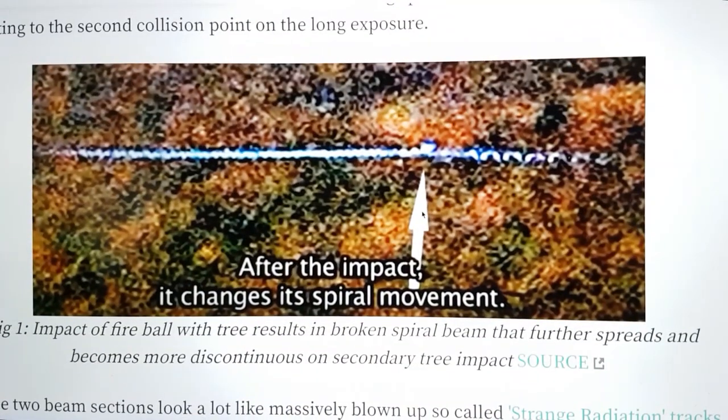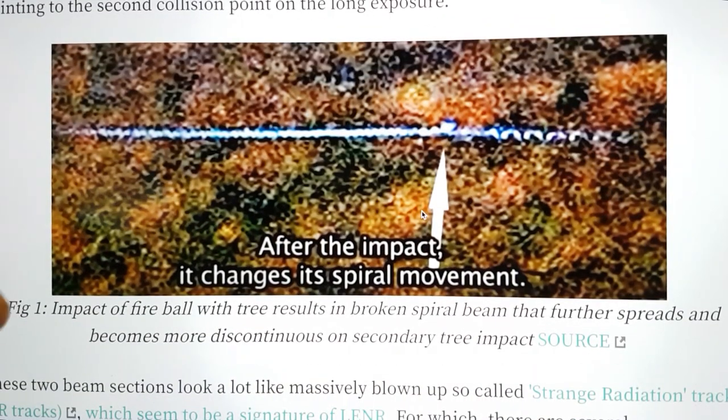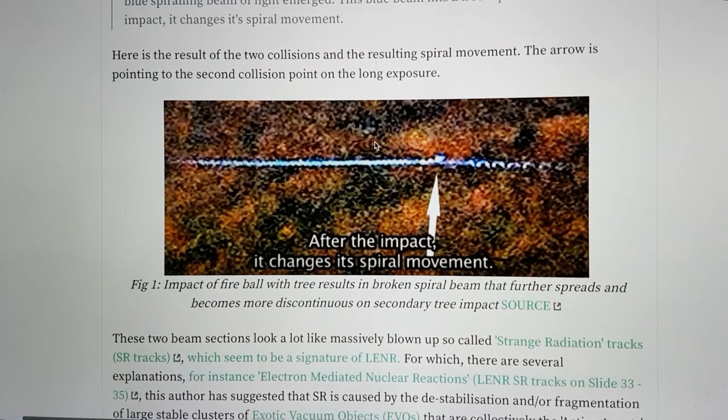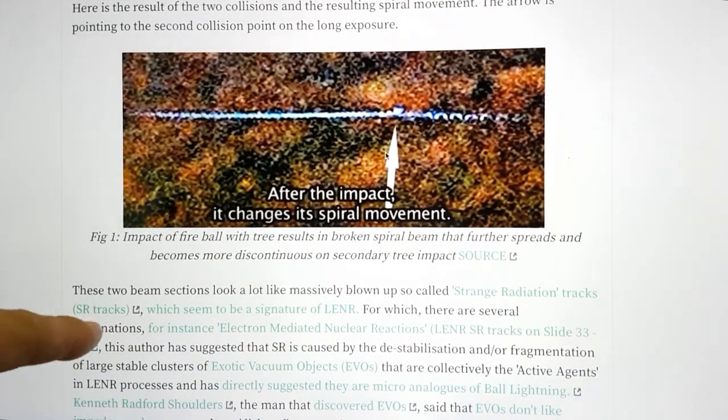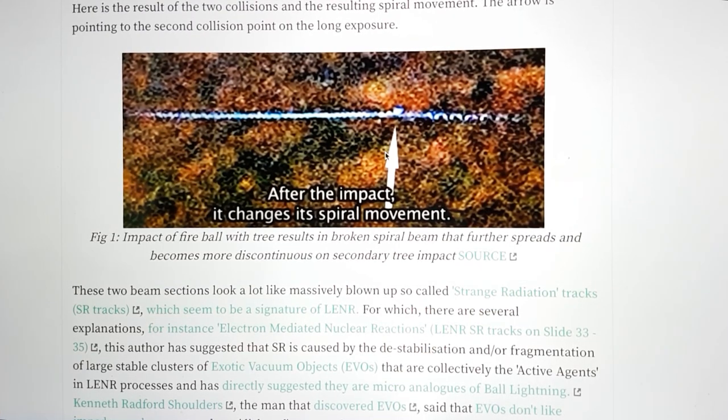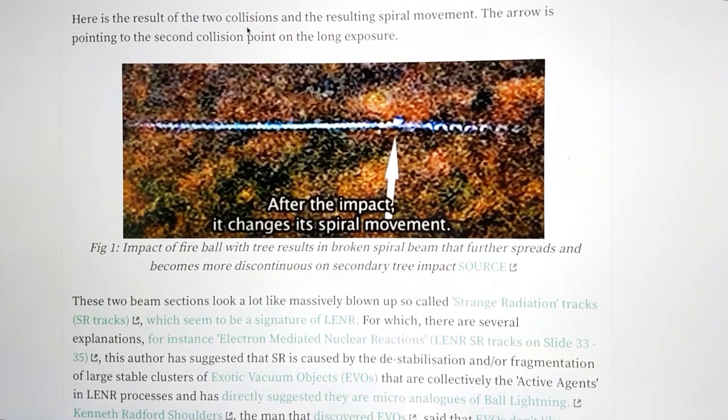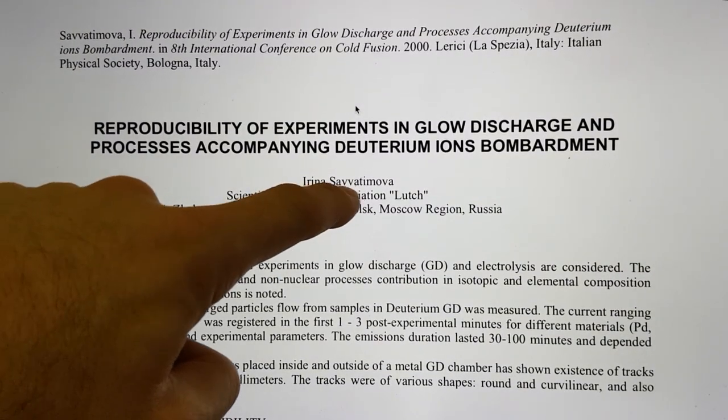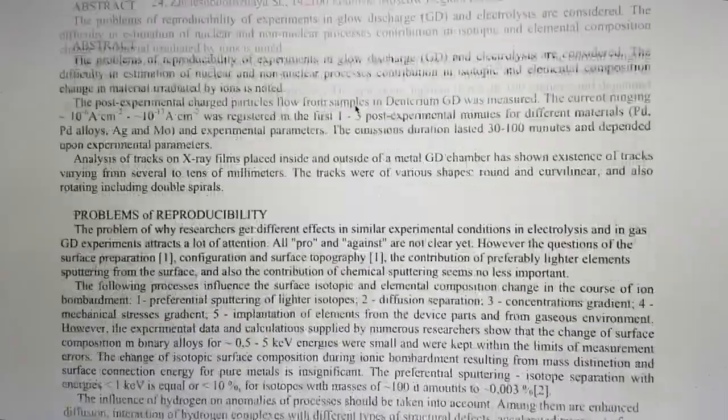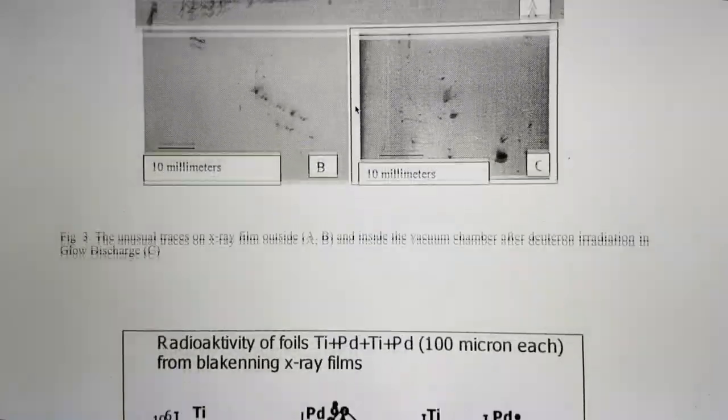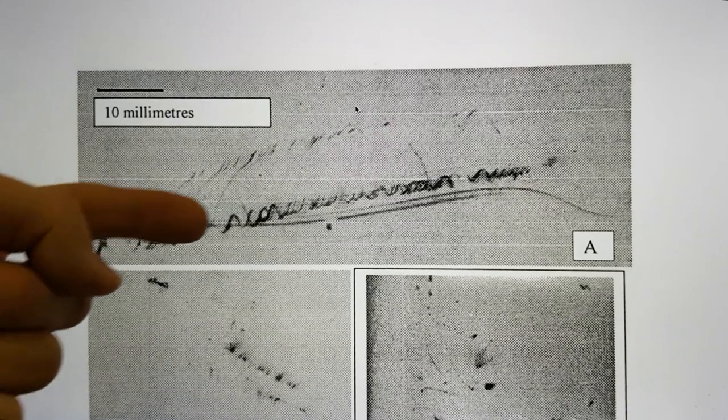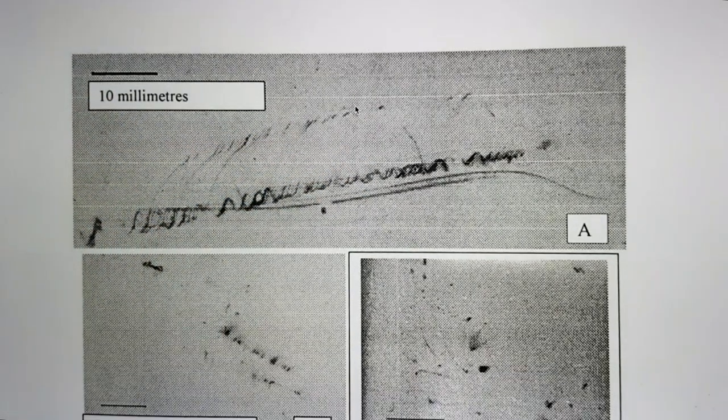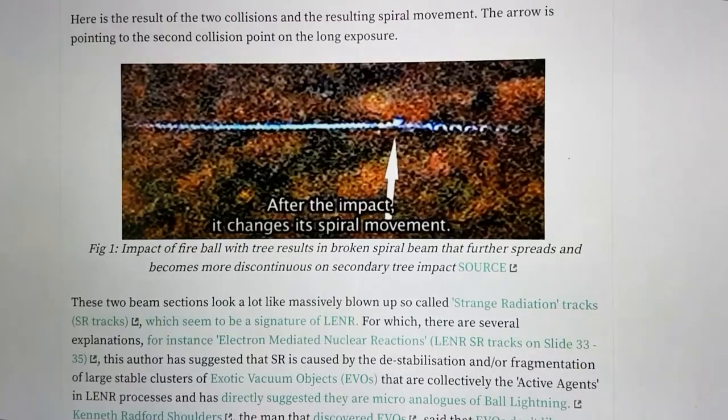But it's kind of broken here, with these kind of apparent offshoots. And then it kind of hits this other treetop here, according to the description. And then the spiral becomes even more pronounced and discontinuous. So when I saw this, I almost could not believe what I was looking at, because what I'm looking at is something that looks a lot like strange radiation tracks, called SR tracks for short, which in my view and in the view of many researchers in Russia, appear to be a signature of LENR.